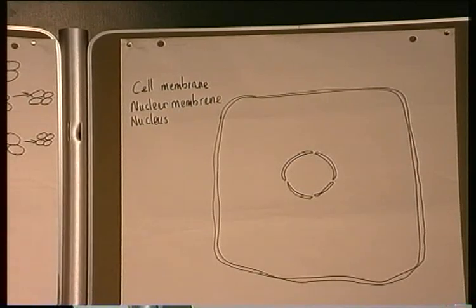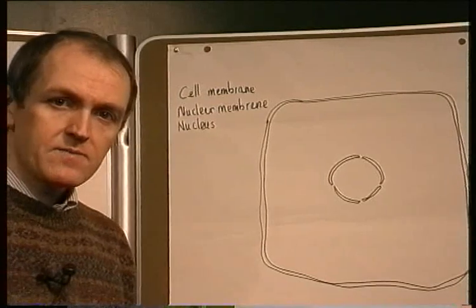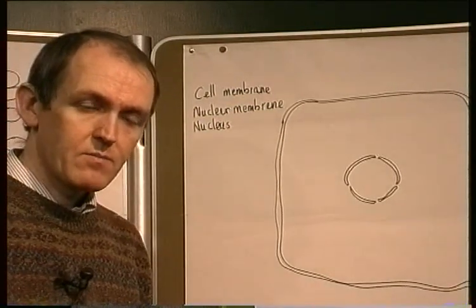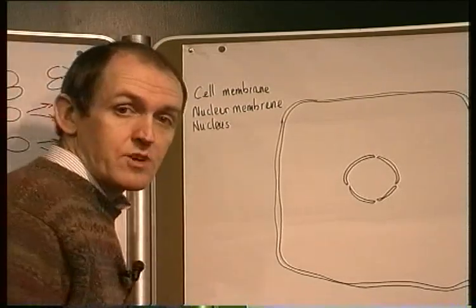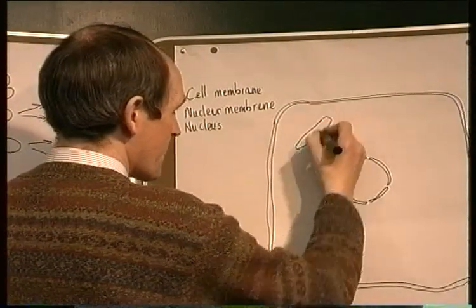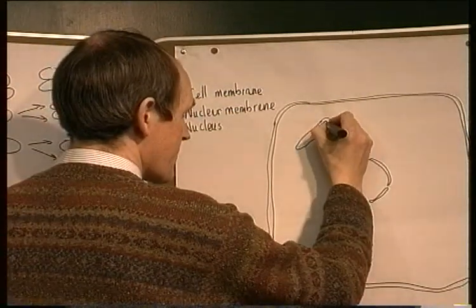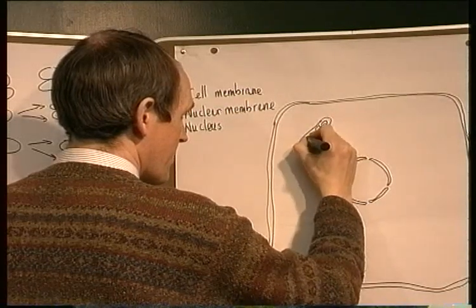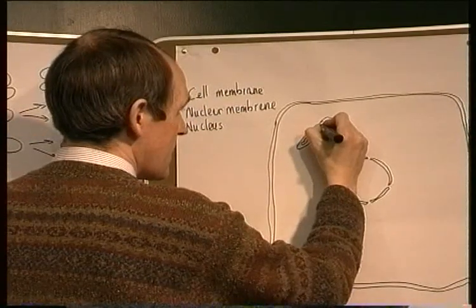Now this time, much more detail can be seen in the cytoplasm of the cell and individual organelles can be identified. Remember, the organelles are the structures in the cytoplasm. One group of organelles that can be seen are sort of sausage-shaped, and they've got an infolded membrane inside them — an infolded membrane to facilitate a large surface area.